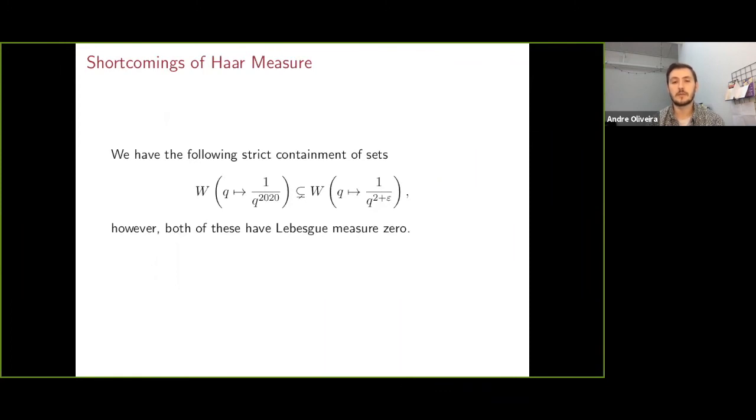Unfortunately, there are some shortcomings to the Haar measure and Lebesgue measure. In particular, we see that if we consider the following two sets in the classical real case, one of these sets is strictly contained in the other, and in fact feels like it should be much smaller. It should be much, much harder to be approximated by this function 1 over q to the 2020, as opposed to 1 over q to the 2 plus epsilon for small epsilon.